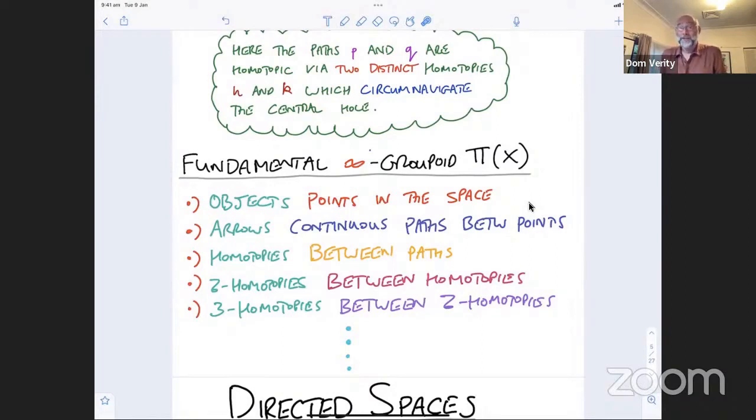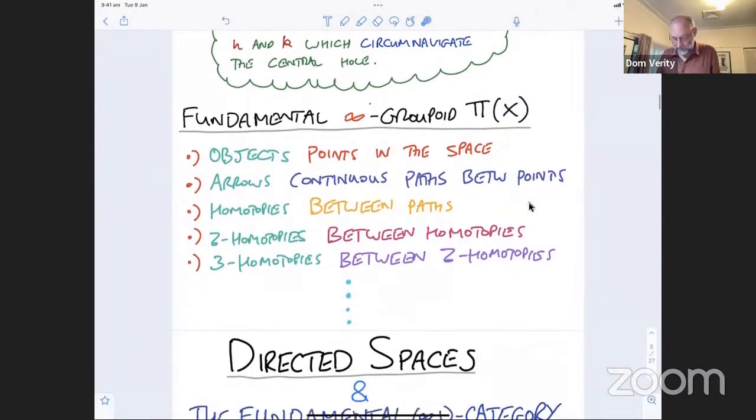So we actually have an infinite tower of homotopies between paths, then homotopies between those and homotopies between those and so forth. And these things all again have some notion of composition, because just as I could compose paths by concatenating, I can compose homotopies by concatenating and I can compose higher homotopies by concatenation as well. We're certainly not going to do the detail of this in this talk, but you might reasonably think that it's possible to form this together into something that looks like a groupoid.